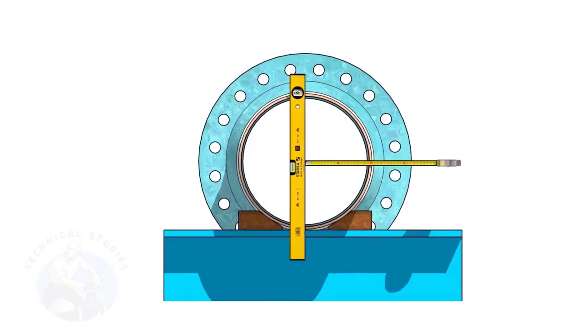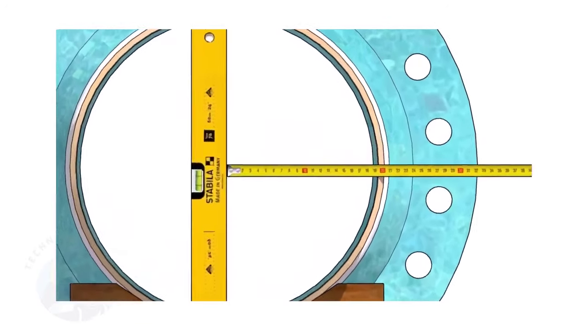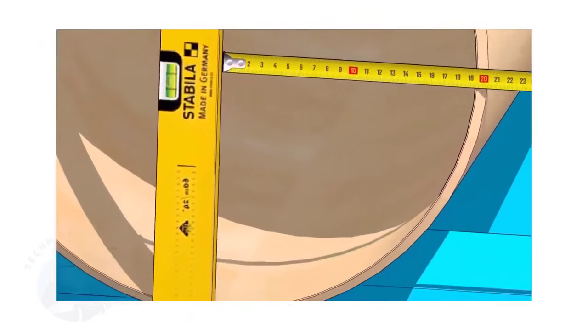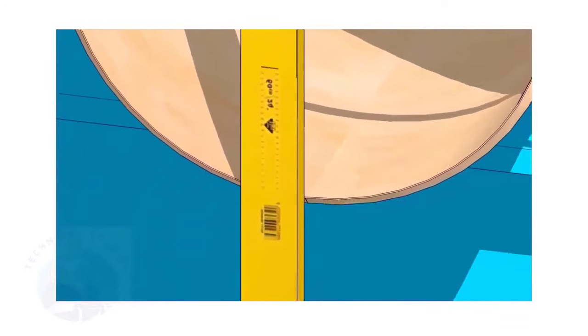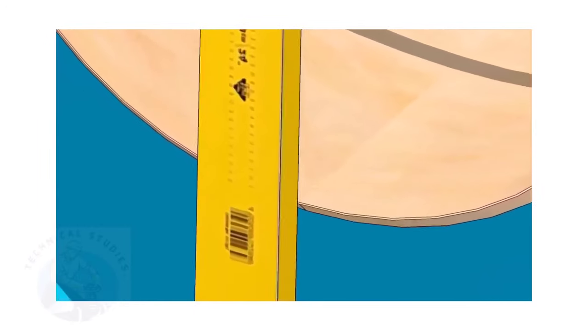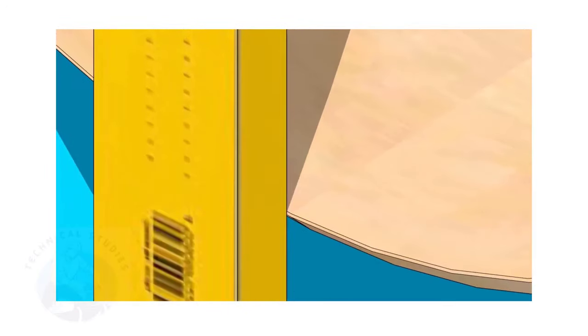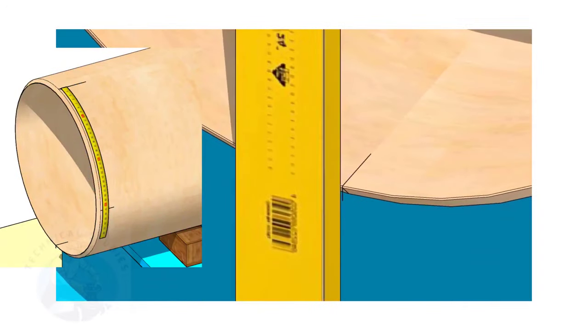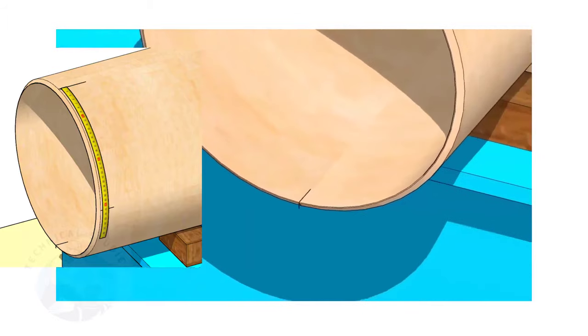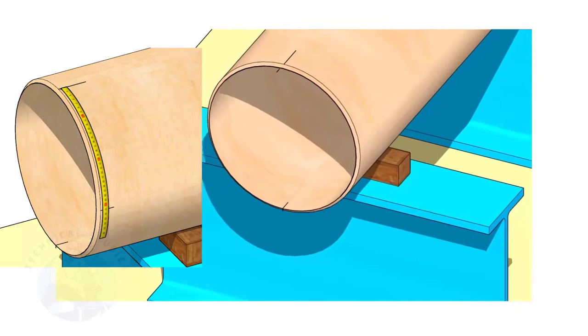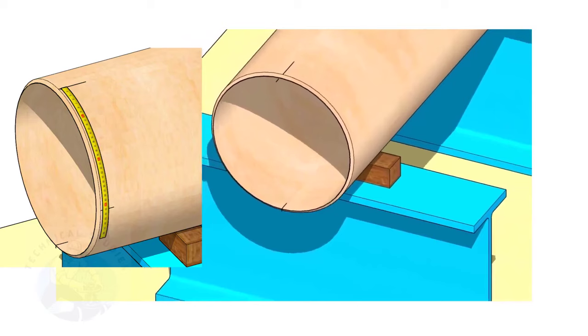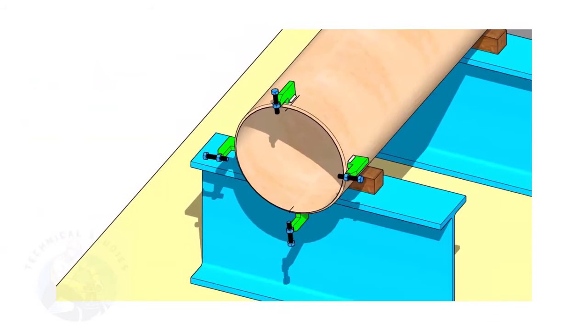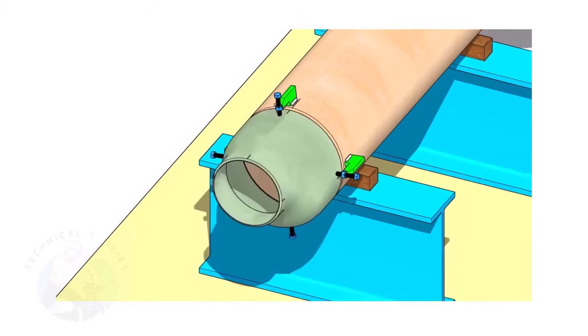Hold the spirit level vertically and transfer the top center mark to the bottom side, as shown. Mark the quarter circumference on both sides of the pipe. If you don't have a pipe aligning clamp, tack weld four jack bolts 90 degrees apart, as shown.